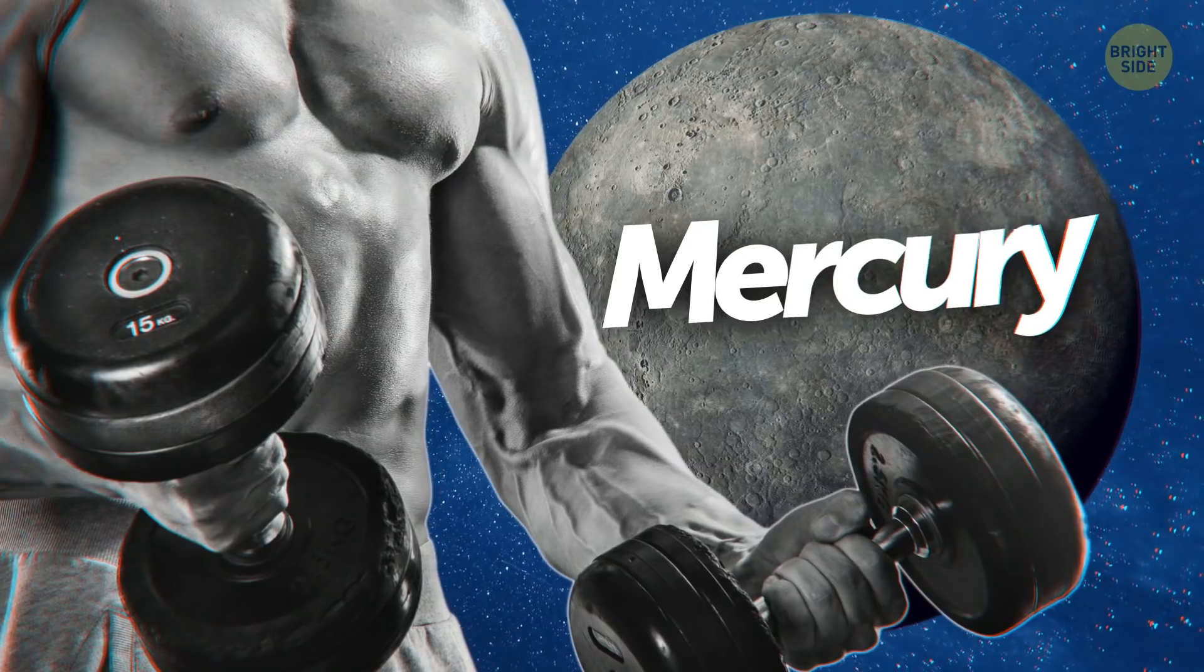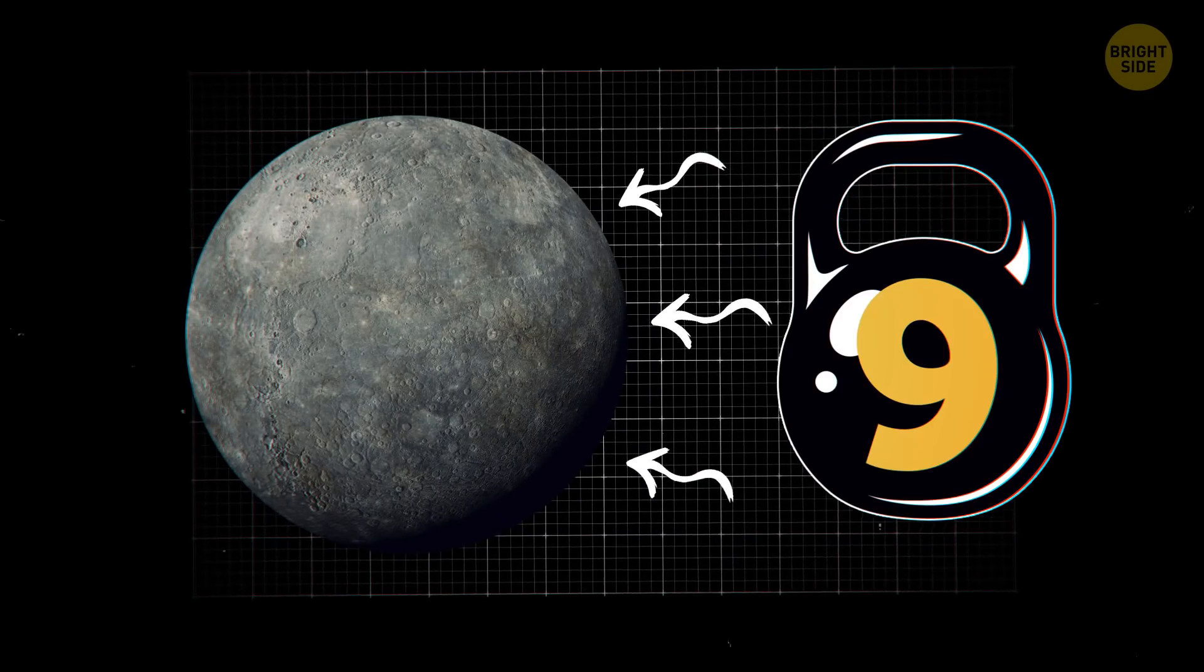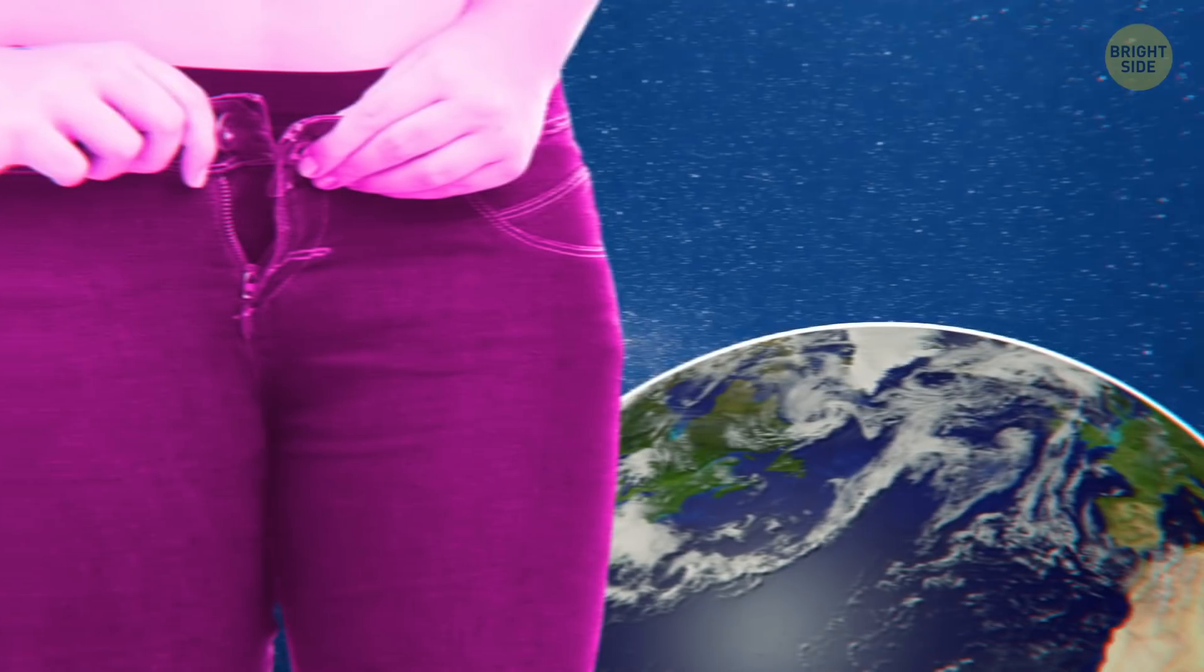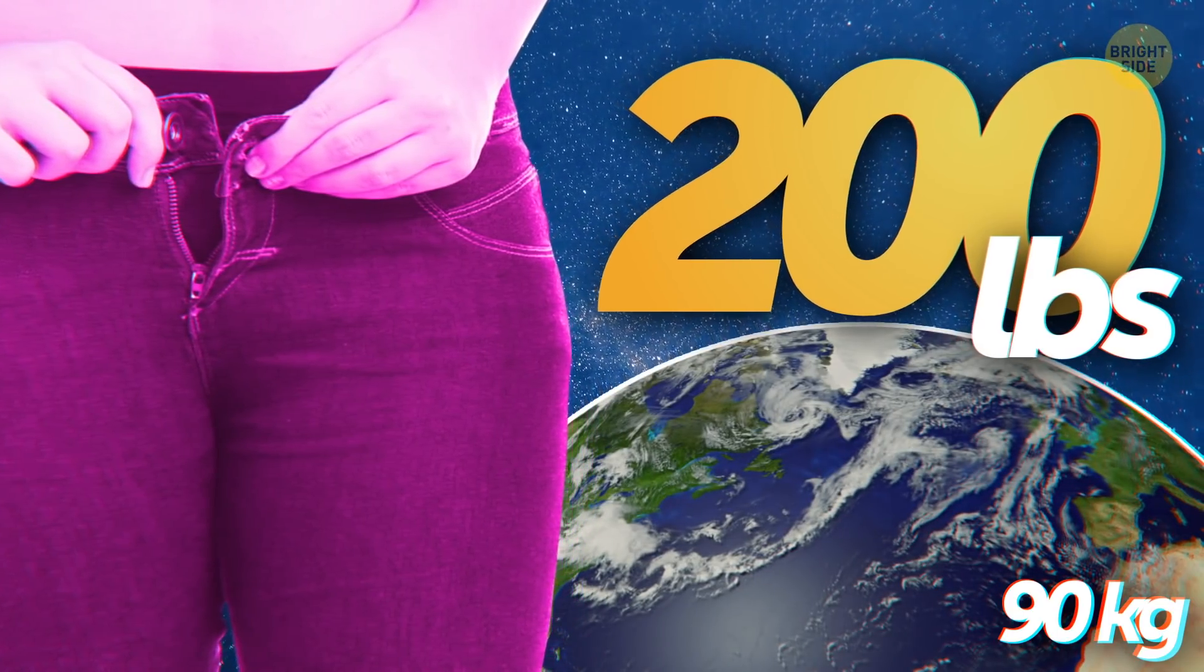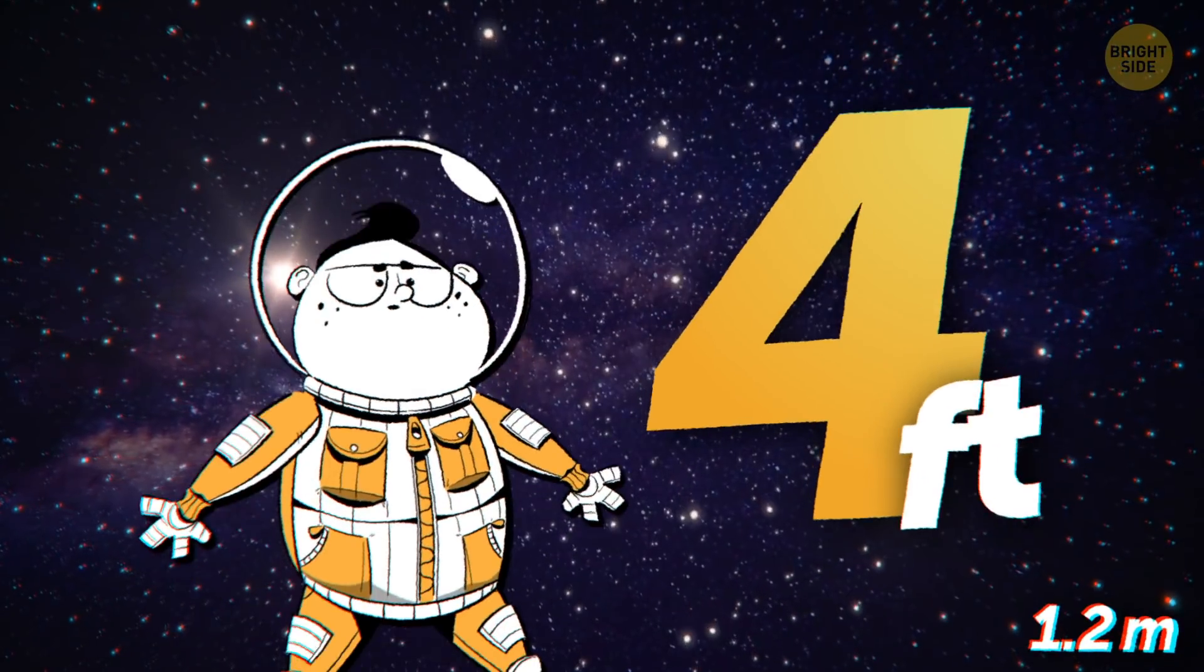Do your powerlifting on Mercury instead. The gravity there would make you, and your weights, almost 3 times lighter. So, if you normally weigh 200 pounds, you're now down to 76. You can also jump over 4 feet in the air.